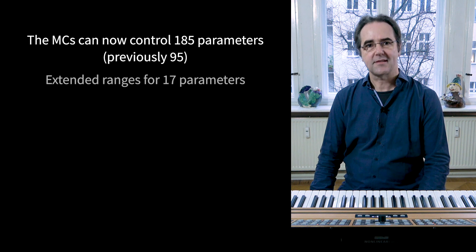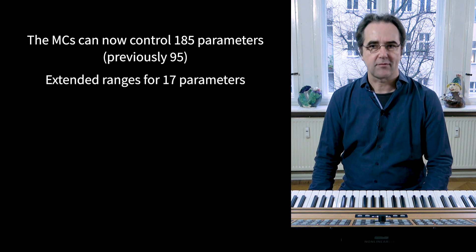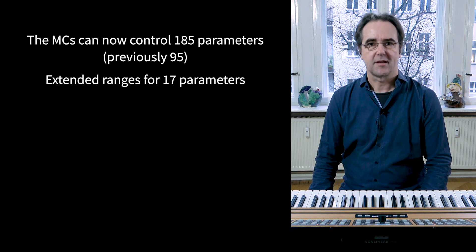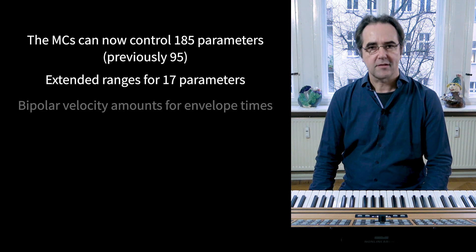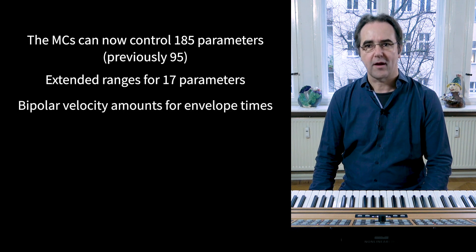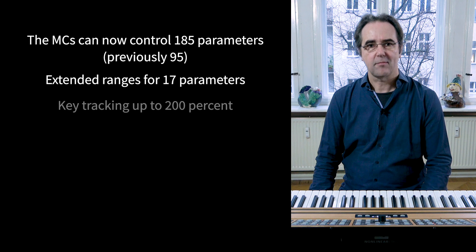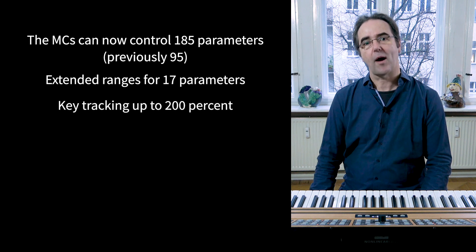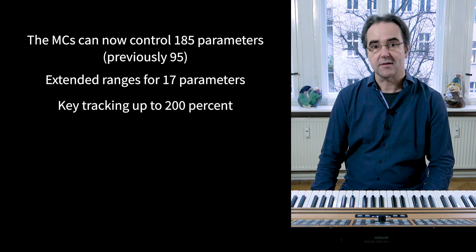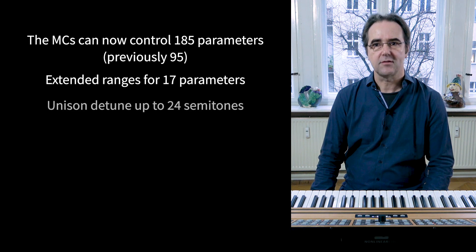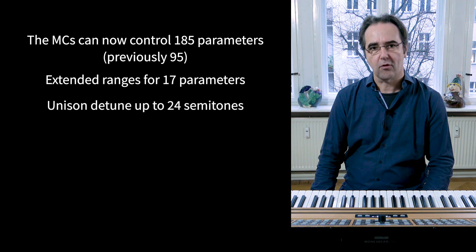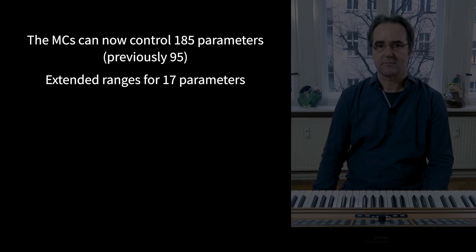We have extended the ranges of 17 parameters, just to pick out a few. Velocity amounts for envelope times have become bipolar. Some key trackings go up to 200 instead of 100%, and Unison Detune now goes up to 24 instead of 12 semitones.